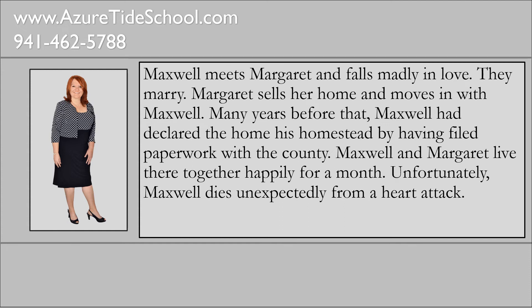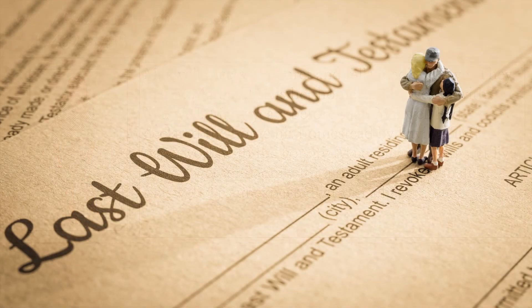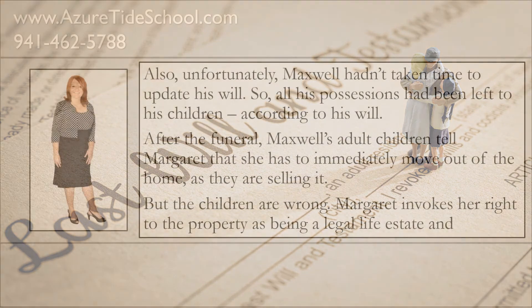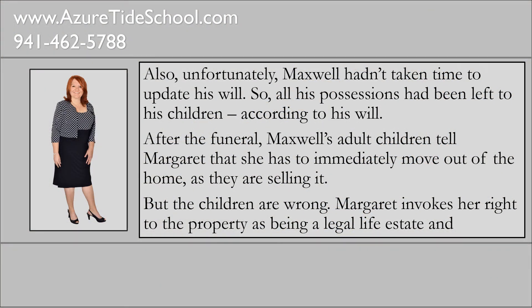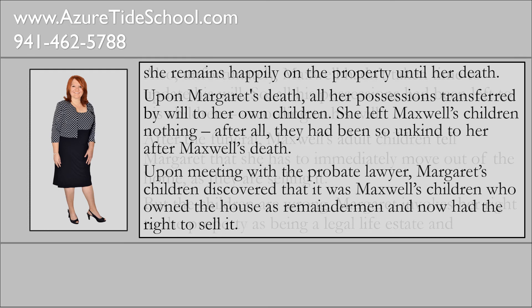Maxwell and Margaret lived there happily for a month. Unfortunately, Maxwell dies unexpectedly from a heart attack. Maxwell hadn't taken time to update his will, so all his possessions had been left to his children according to his will. After the funeral, Maxwell's adult children tell Margaret that she has to immediately move out of the home as they are selling it. But the children are wrong — Margaret invokes her right to the property as a legal life estate, and she remains happily on the property until her death.